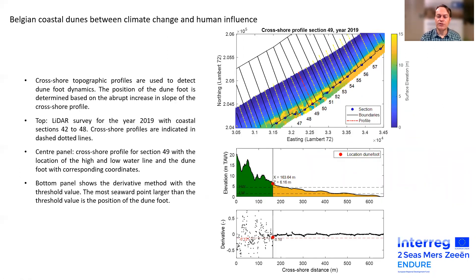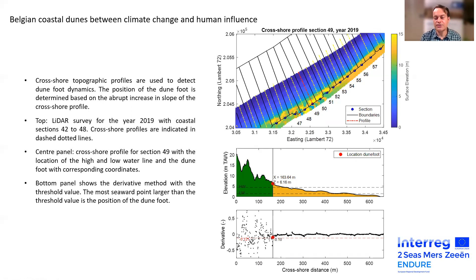The way we look at the dune foot position was to investigate a profile in the middle of each coastal section. We present three steps in this picture: first the profiles are shown, then in the central panel we can see the high water level, low water level, and the inflection point where the slope changes abruptly. Based on this change in slope, we identify the real dune foot position. We also use the derivative method with a threshold value: the most seaward point larger than the threshold value is the dune foot position.